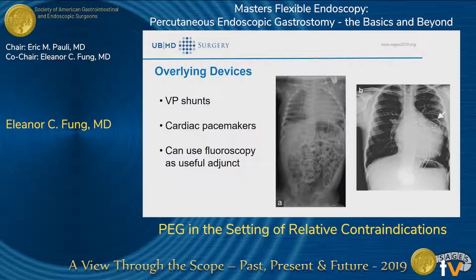For overlying devices such as VP shunts or cardiac pacemakers and ICDs, the leads may not be visible externally, but with fluoroscopy or X-rays you can see where the tracks of these leads are. That is a useful adjunct to prevent interference with or dislodgement of those devices. It is possible to place a PEG in these patients — I would use fluoroscopy in those instances.